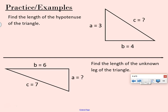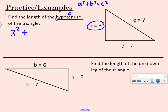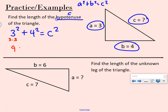Practice. Find the length of the hypotenuse of the triangle. The hypotenuse, remember, is side C. So we have A squared plus B squared equals C squared. Leg A is 3, so we say 3 squared plus B squared — B is 4 — so 4 squared equals C squared. We don't know what C is, so we leave it as C squared. 3 squared is 3 times 3, which is 9. 4 squared is 4 times 4, which is 16. So 9 plus 16 is 25, giving us 25 equals C squared.